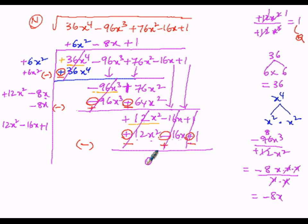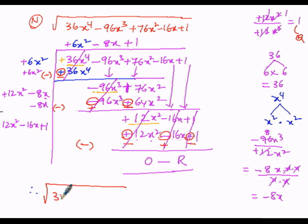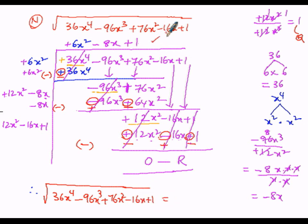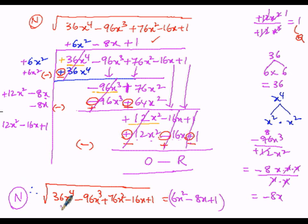We got 0 as the remainder. So the square root of 36x to the power of 4 minus 96x cubed plus 76x squared minus 16x plus 1 is equal to 6x squared minus 8x plus 1. This is the square root of the given polynomial.